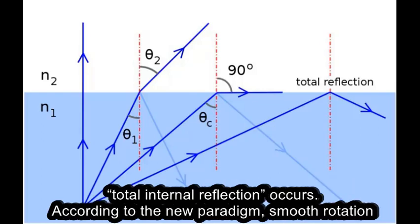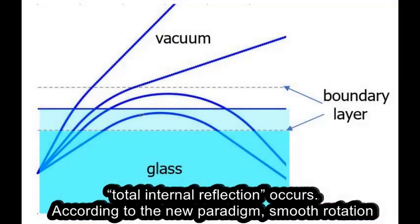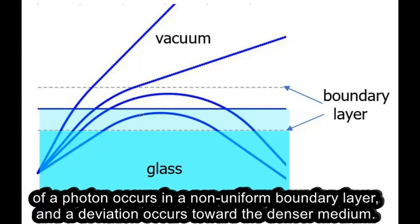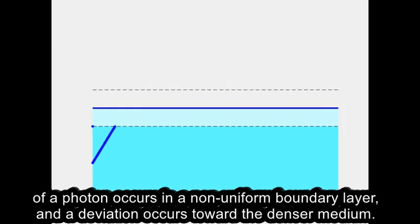To explain total internal reflection, scientists usually discuss the conditions under which total internal reflection occurs. According to the new paradigm, smooth rotation of a photon occurs in a non-uniform boundary layer, and a deviation occurs toward the denser medium.